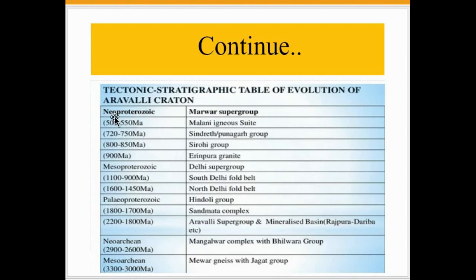The Aravalli Craton consists of three supergroups: the Marwar Supergroup, the Delhi Supergroup, and the Aravalli Supergroup. The Marwar Supergroup includes the Idar-Pura Granite, Sirohi, Sindreth, Gadu Group, and Malani volcanics. The Mesoproterozoic Delhi Supergroup comprises the North Delhi Fold Belt and South Delhi Fold Belt. The Paleoproterozoic includes the Hindoli Group, Sandmata Complex, and Aravalli Supergroup, which form the basement rocks.